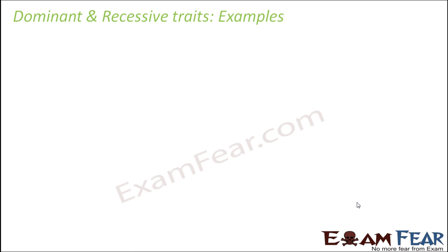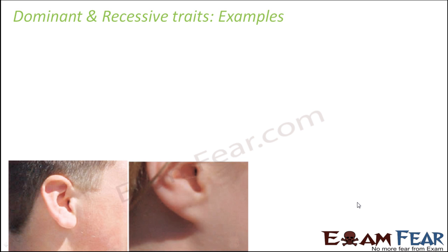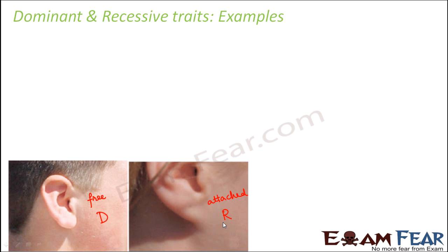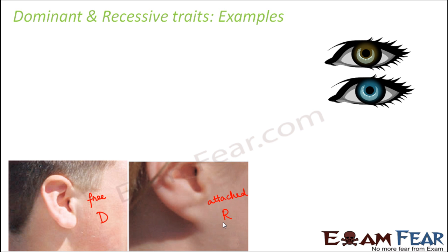Now let us look at some examples of dominant and recessive traits. If you look at the earlobe, there are two types of inherited traits — one is a free earlobe and the other is the attached earlobe. Out of these, the free earlobe is the dominant trait and the attached earlobe is the recessive trait. So if a genotype has two alleles — one for free and one for attached — the phenotype will be free earlobe, because free is dominant over attached.